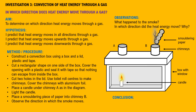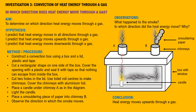What do you observe? In which direction does the smoke move? Can you explain why this happens? The smoke from the smoldering paper moves into the box through chimney B and then out of the box in an upwards direction through chimney A. The smoke moves upwards through chimney A because the heat of the candle flame moves upwards. We may conclude that heat energy moves upwards through a gas.